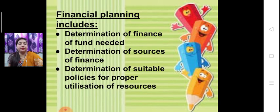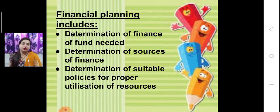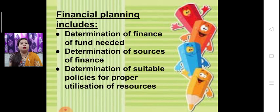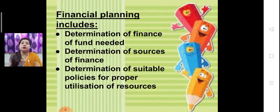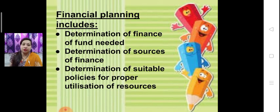Financial planning includes: determination of finance — the fund needed by the company; next, determination of sources of finance — to find out from where we acquire money, whether from debentures, equities, banks, or financial institutions. These are the sources it includes.